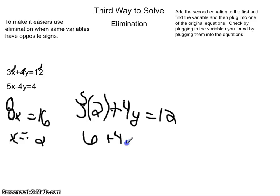And then you would minus the 6 over. So you would get 4y equals 6. And then you would divide the 4 by the 6 which would get you y equals 1.5. Or you could do the fraction 6 fourths.